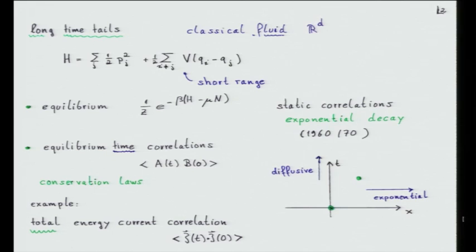The current is defined from local conservation laws — since you have conservation laws, you can deduce the expression for the energy current. Now I want to come to the long-time tail business. One is looking at this total energy-energy current correlation in equilibrium and asking whether you can compute anything. Of course, you cannot for a complicated system. But what you can do at sufficiently low density is compute this correlation function by analyzing the nonlinear Boltzmann equation linearized at thermal equilibrium.